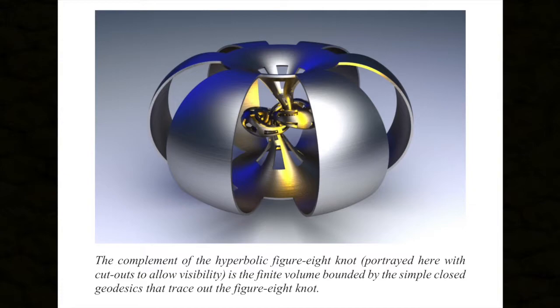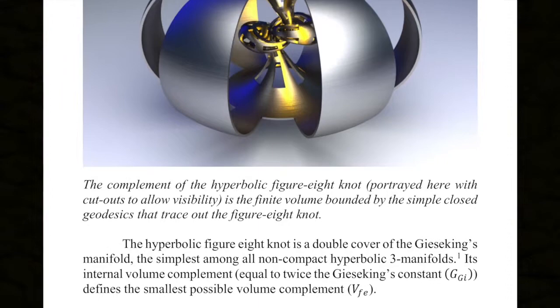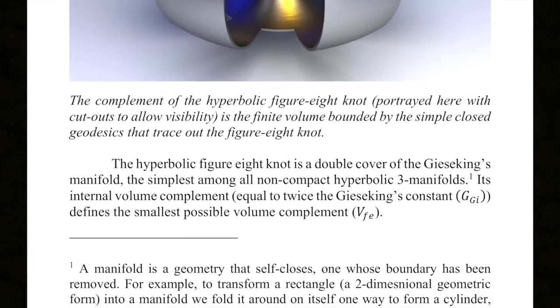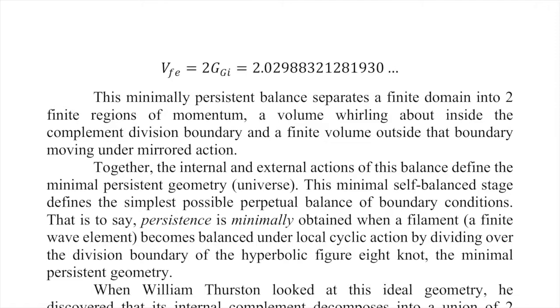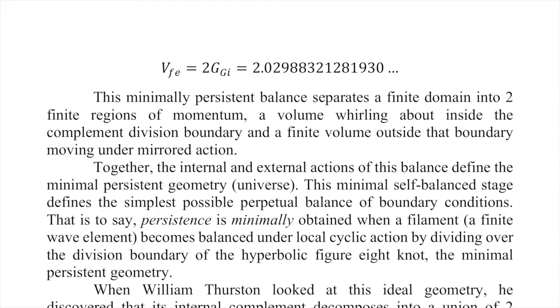No matter where you are on the surface, if you trace out the shortest path through and back to yourself, you'd be following a loop that traced out a figure-eight before you got back. The hyperbolic figure-eight knot is a double cover of the Gieseking manifold — the simplest among all non-compact hyperbolic three-manifolds. Its internal volume complement, equal to twice the Gieseking constant, defines the smallest possible volume complement: 2.02988321281930… It's a geometric number like pi.